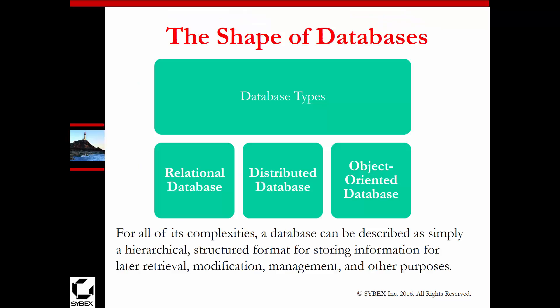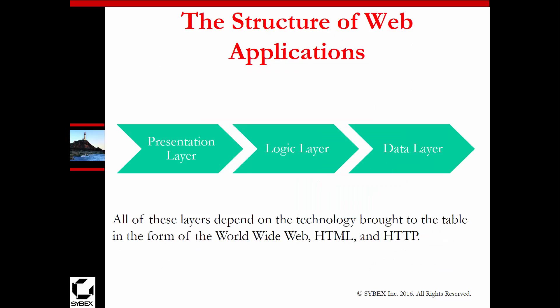We have different types of databases — relational is a common one, but there's also object-oriented and distributed. The structure of a web application is typically a presentation layer, a logical layer, and a data layer. All of these in conjunction make up that structure.